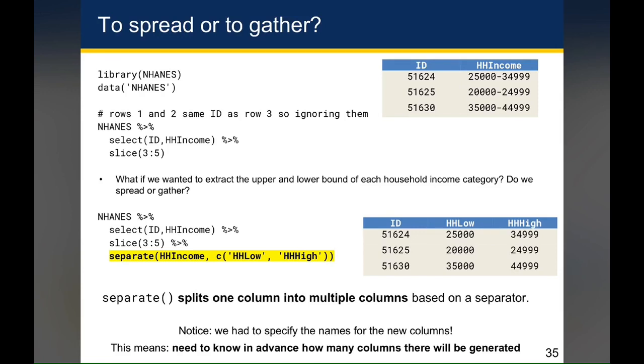One important thing to note here is that we had to actually specify the names of the new columns that we create. And what this means is that we actually need to know in advance how many columns will be generated. Because if we supply two names here and there happens to be a dash or two dashes with three numbers in between, we would get an error because we only supplied two names and the separate function was expecting three values back.